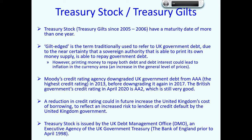Treasury stock, prior to 1998, was issued by the Bank of England and a cheque for interest on the debt was received from the Bank of England. However, since April 1998, treasury stock has been issued by the UK Debt Management Office, often referred to as the DMO, which is an executive agency of the UK government's treasury.